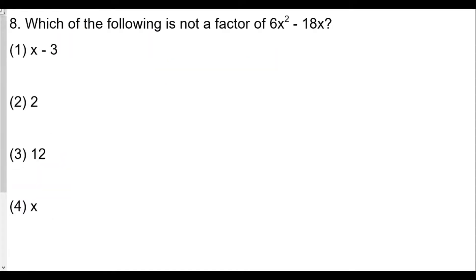Which of the following is not a factor of 6x² - 18x? We can divide both 6 and 18 by 6, and x² by x will be x. So our GCF is 6x. 6x² divided by 6x is just x, and 18x divided by 6x is 3. Now we see the words 'not a factor.' So x - 3 is a factor so it can't be this one.